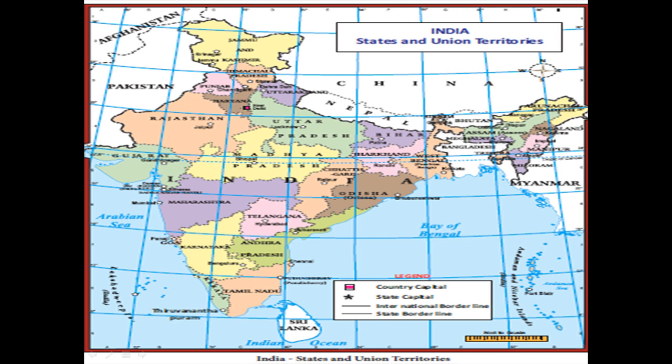Referring to the India states and union territories map, we can see 29 states and 7 union territories. The map clearly explains all the states. The imaginary lines and the blue-colored longitudinal lines are also visible.